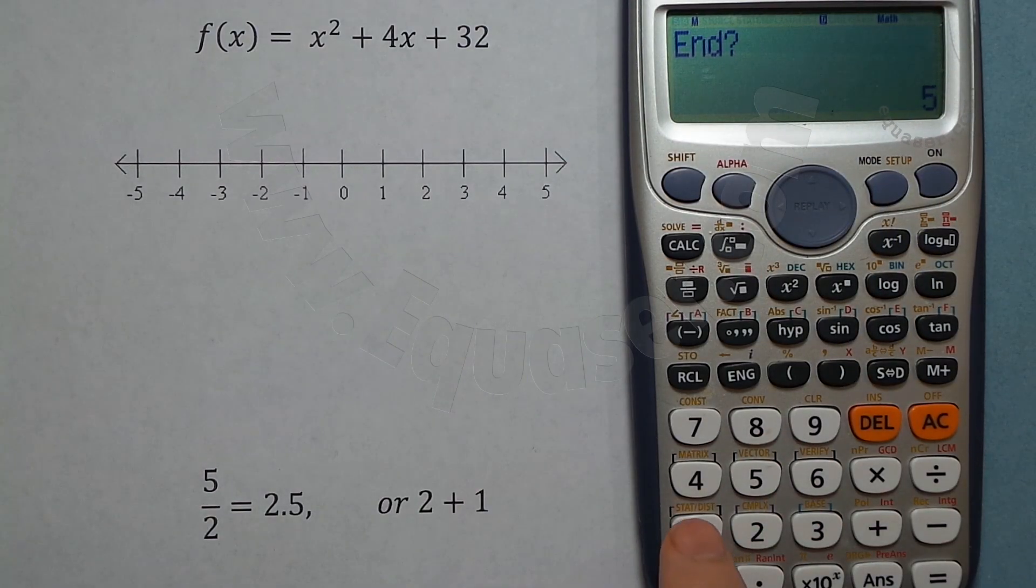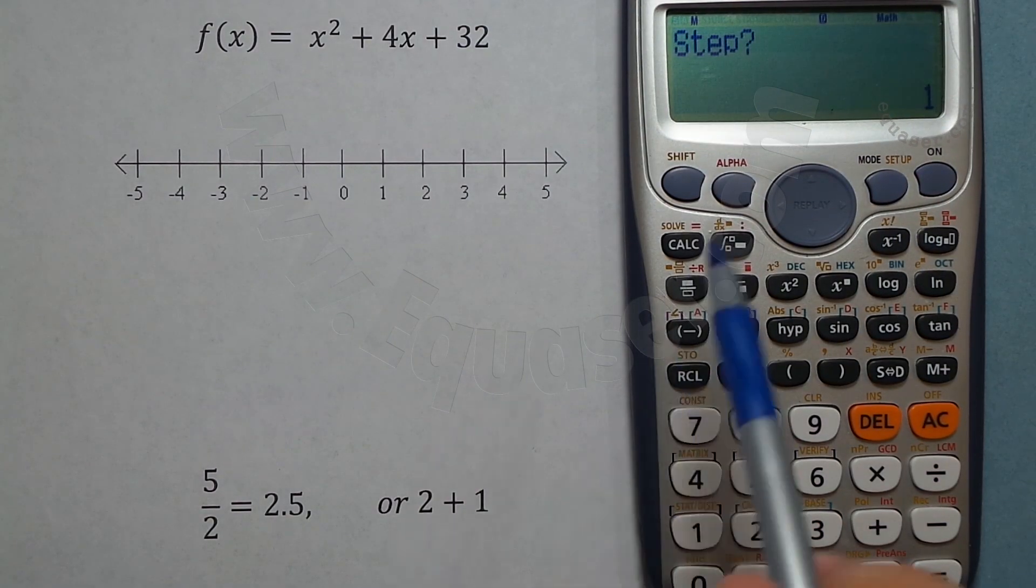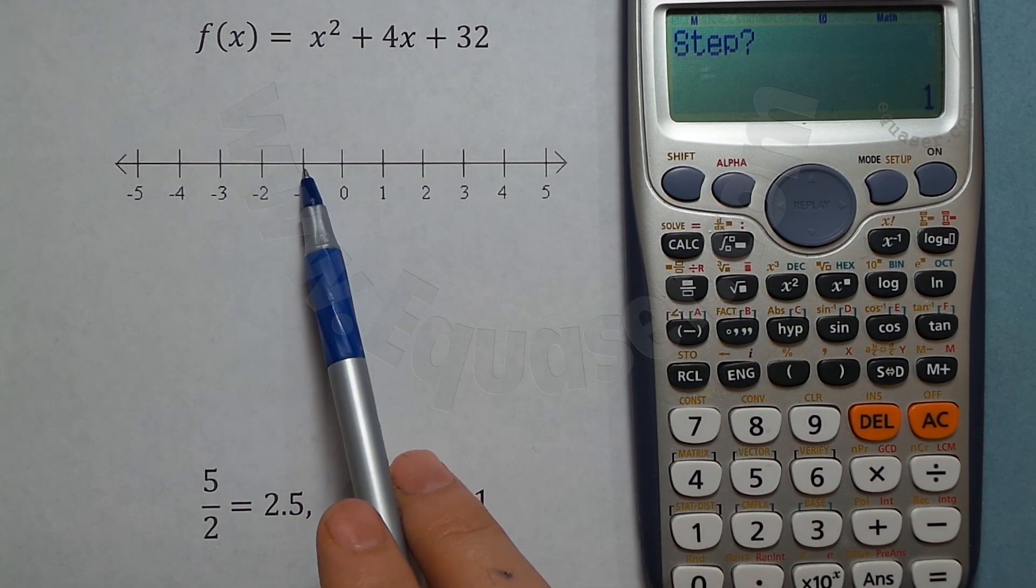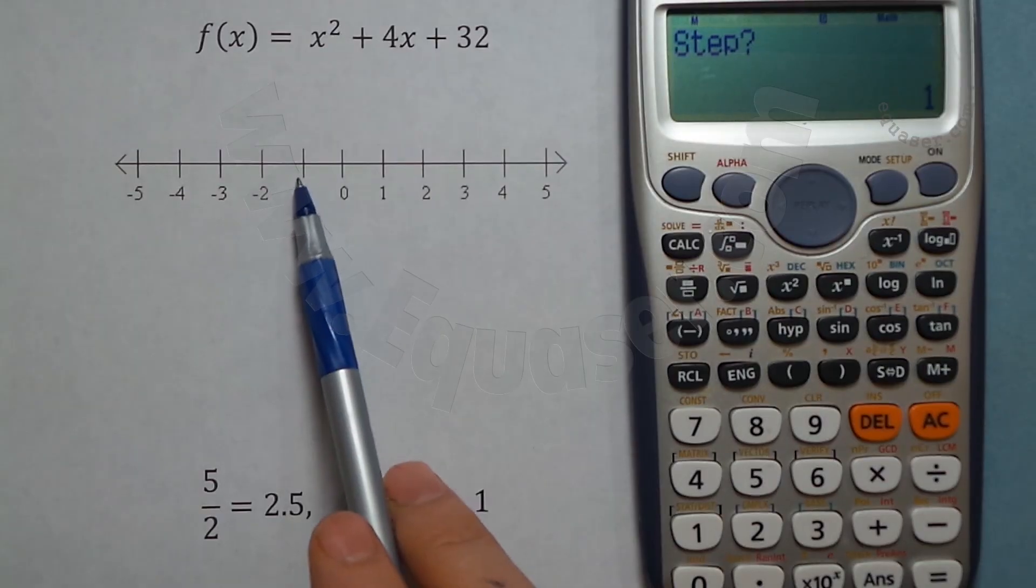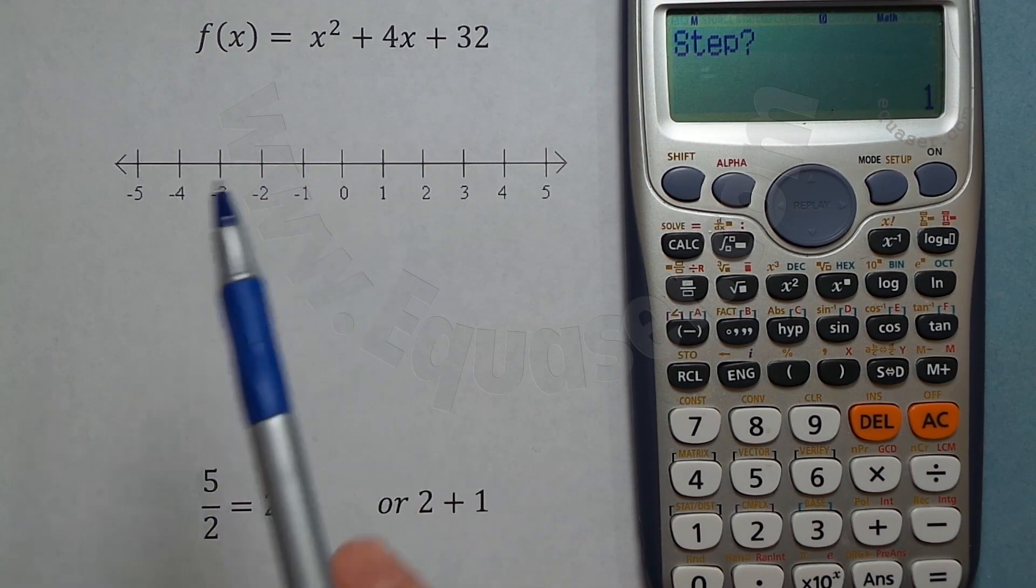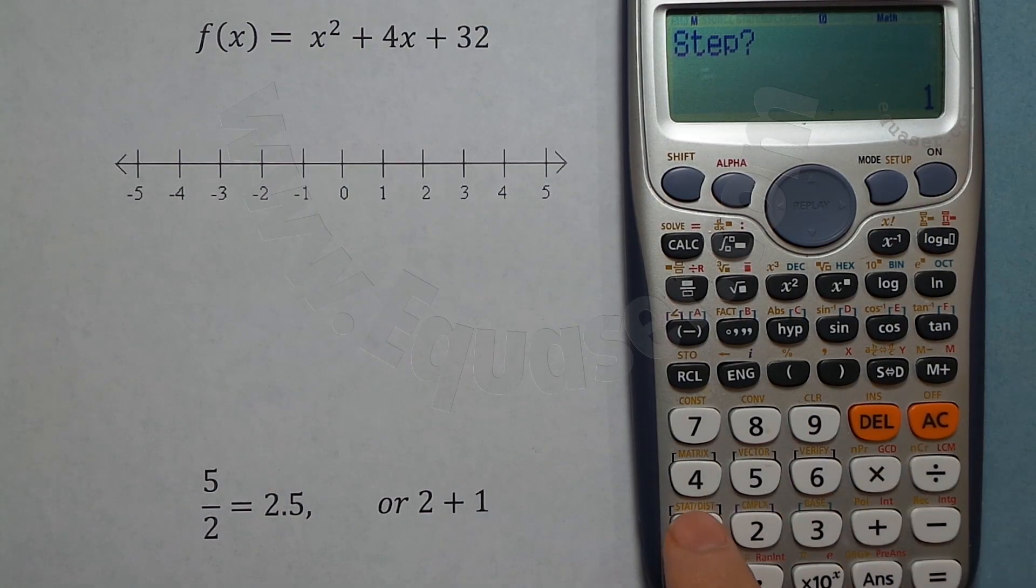Do I want to jump 1 each step, or 0.7, half, or something? So let's put 1. That's 1 and then equal sign. Now it gives you all the values of x and the function.